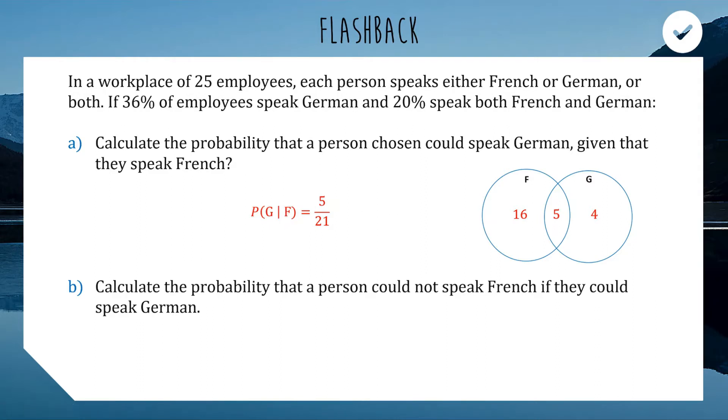Question B, calculate the probability that a person could not speak French if they could speak German. So, if they could speak German, we're choosing from our nine German speakers. What's the probability that they do not speak French? So, we've got to be outside the French circle. So, we're choosing these four out of these nine. Well done if you said four out of nine. So, this is probability of not French given that we're choosing from the German people. As we saw in the last topic, a lot of really complex sounding probability questions just needs to draw a little quick picture and then it becomes super easy.